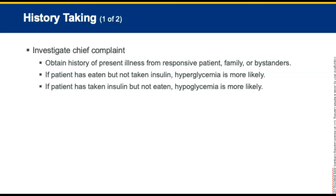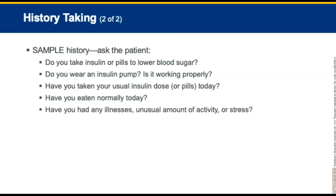For history taking, investigate the chief complaint, obtain the history of present illness using OPQRST, and obtain the patient history. If the patient has eaten but not taken insulin, hyperglycemia is more likely. Obtain a SAMPLE history. For a known patient with diabetes, ask: Do you take insulin or pills to lower your blood sugar? Do you wear an insulin pump and is it working properly? Have you taken your usual insulin dose or pills? Have you eaten normally today? Have you had an illness, unusual activity, or stress? Look for an emergency medical identification tag — wallet card, necklace, or bracelet.